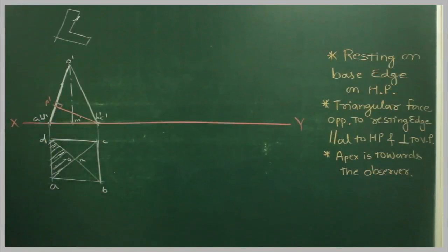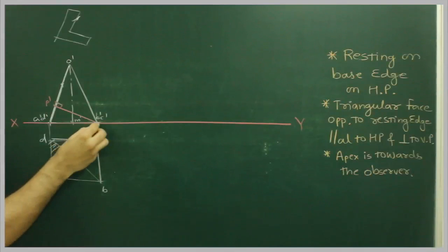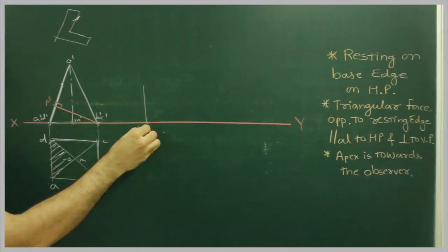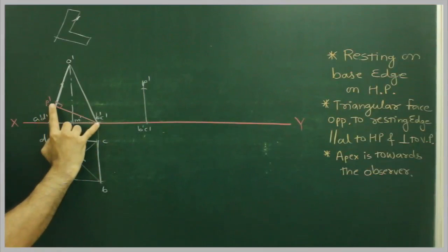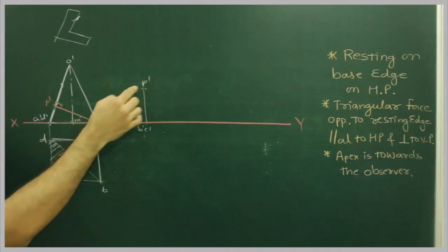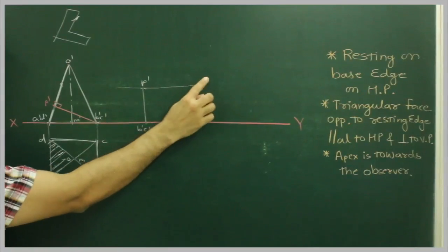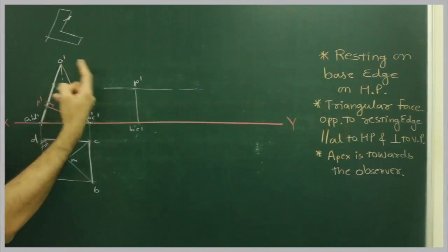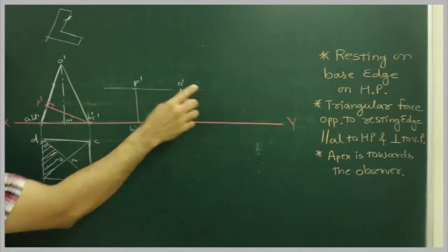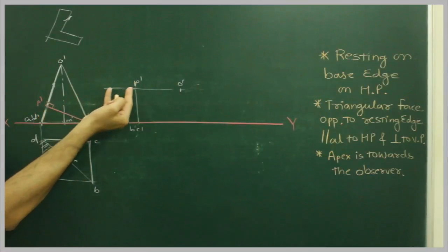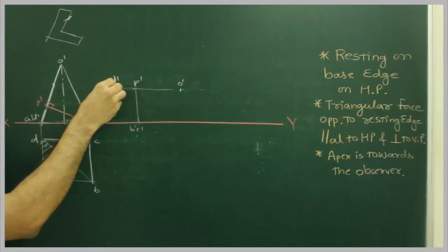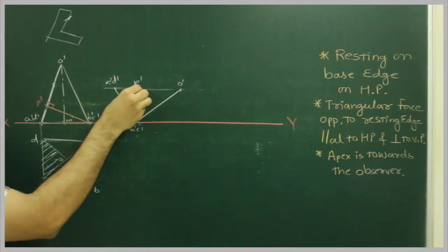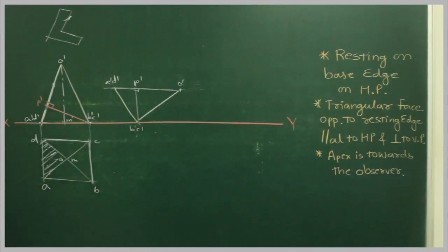This will be P dash. Then we will draw — we will not mark over here. This is B dash C dash, this is P dash. We will take this and cut here, then draw a horizontal line. Then we will take P dash to O dash, cut here, and P dash to A dash D dash, cut here. So we have drawn the triangular face, and now it is parallel to the horizontal plane — parallel to XY.